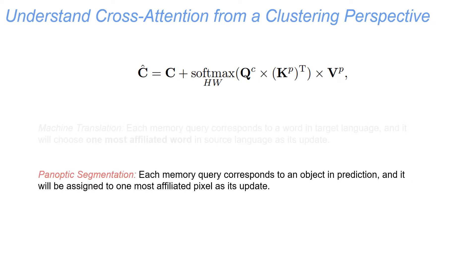When applied to panoptic segmentation task, we can interpret it as follows. Each memory query corresponds to an object in prediction, and it will be assigned to one most-affiliated pixel as its update. But this actually contradicts our common sense to the problem, where we usually expect assigning pixels to objects during clustering instead of objects to pixels. The problem lies in the activation function of softmax on spatial dimensions, which inverts the assignment relationship between objects and pixels.